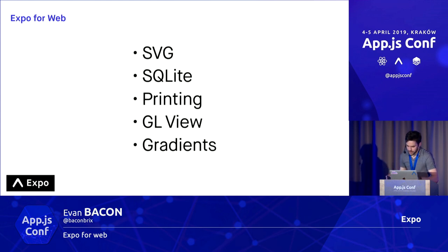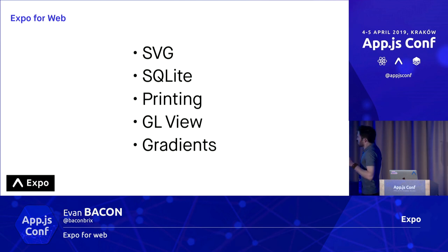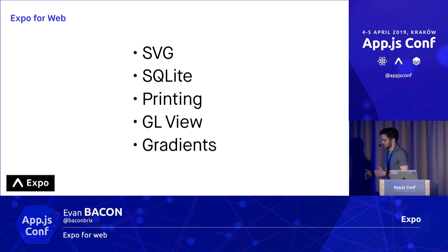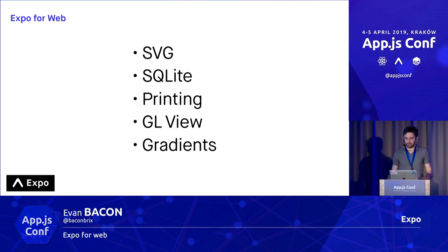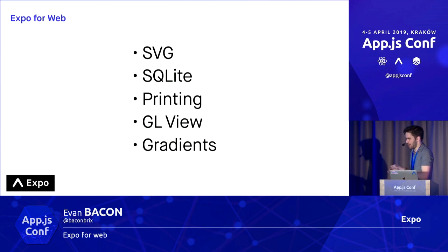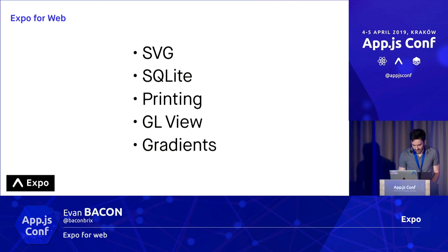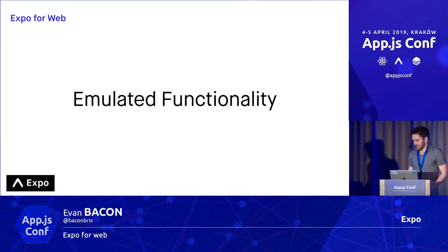Other direct abstractions are things like SVG, SQLite, and printing. SVG is just supported in web by default, so it seems odd to use a higher level abstraction. But the reason is that if you use Expo's version of SVG, then it works on native as well as web. Similarly, it seems odd to use linear gradient as a component rather than a CSS prop, but that's the reason — it works everywhere.